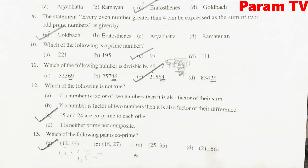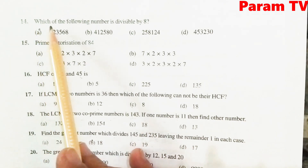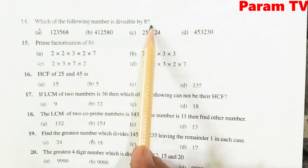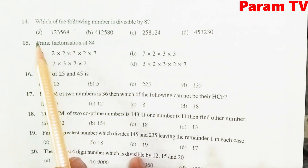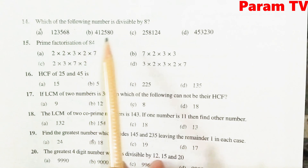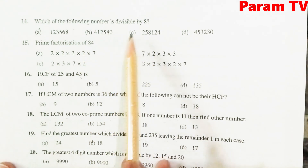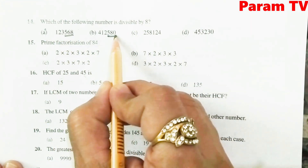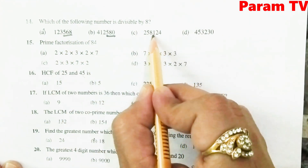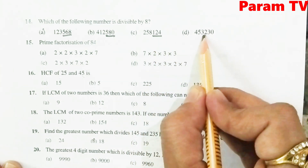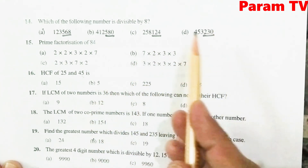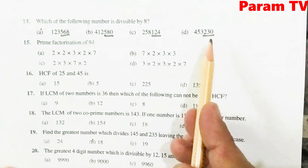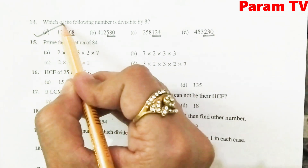Next, 14th question: which of the following is divisible by 8? इनमें से कौन divisible by 8 है? Last three digits के number को check करना होता है — divide करके 8 से देख लीजिए. Right option is A.